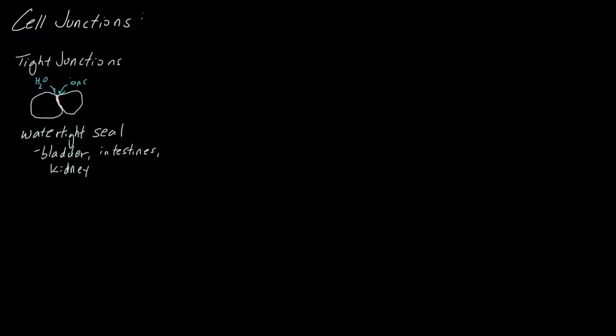The next type we're going to talk about are desmosomes. Let's say we have again two cells like this. What desmosomes do is - I'm exaggerating the gap between these a little bit - but they're kind of like connections that hold two cells together.